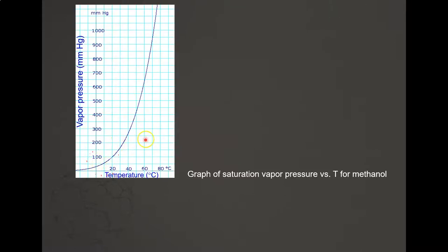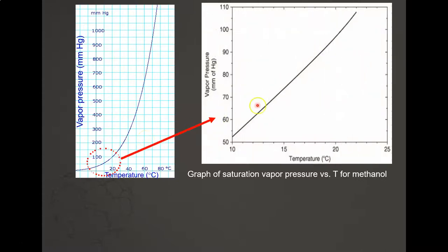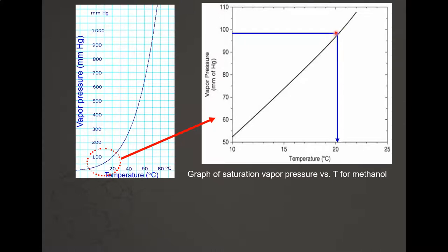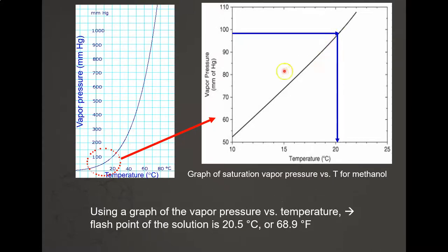The saturation vapor pressure versus temperature graph for methanol is scaled down for easier reading. Locating the value of 98.4 mmHg on the vapor pressure axis, we can read off the corresponding flashpoint temperature, which is approximately 20.5°C or 68.9°F.